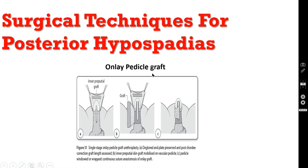The onlay pedicle graft is a single-stage repair, unlike the two-stage repair, where the degloved urethral plate is preserved and post-chordee correction graft length is assessed. An inner prepucial skin graft is mobilized on a vascular pedicle, brought down, the pedicle is windowed and wrapped, and then continuously sutured over the U-shaped incision. This is called an onlay pedicle graft, using the inner surface of the prepucial skin.